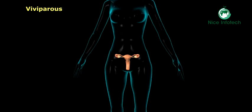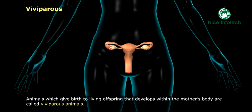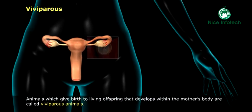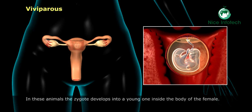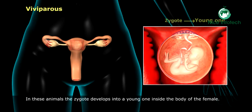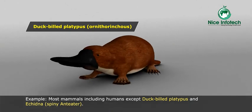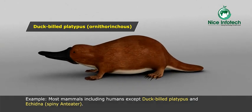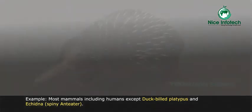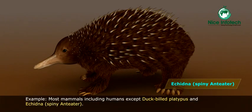Viviparous animals give birth to living offspring that develops within the mother's body. In these animals, the zygote develops into a young one inside the body of the female. Examples include most mammals including humans, except the duck-billed platypus, echidna, and spiny anteater.